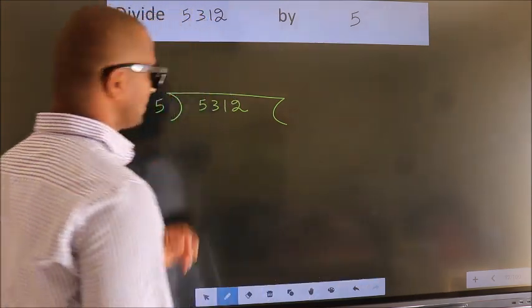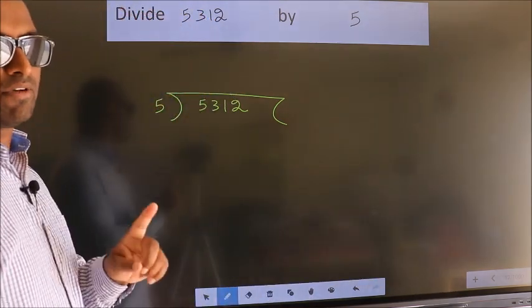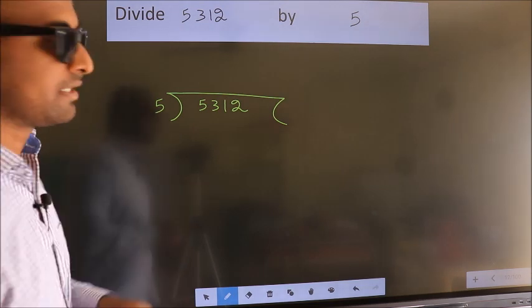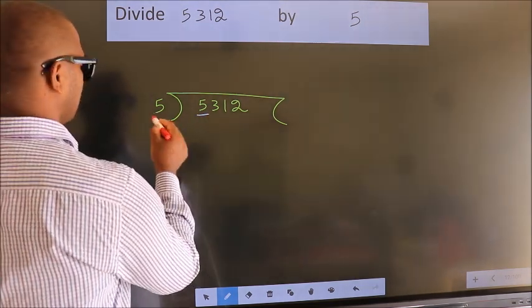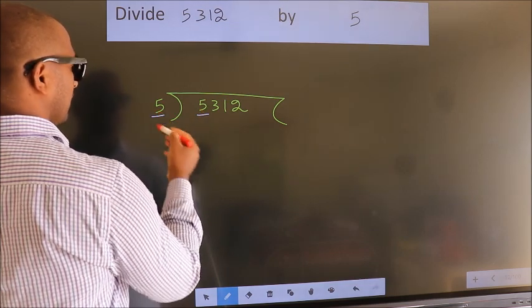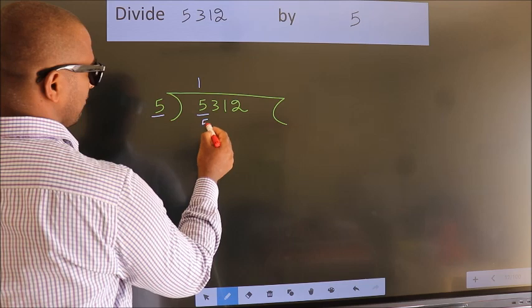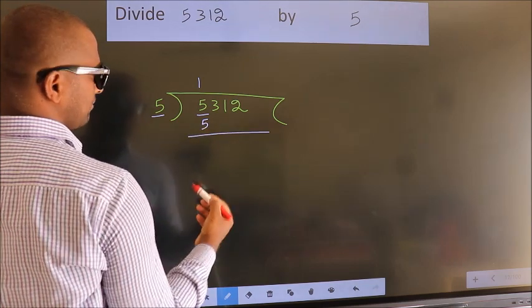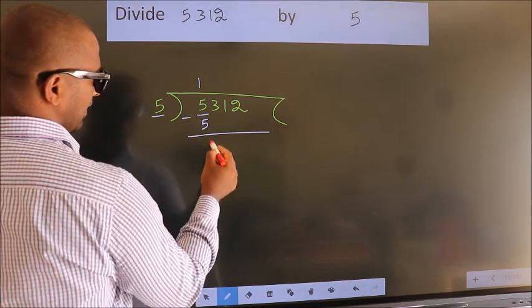This is your step 1. Next. Here we have 5, here 5. When do we get 5? In the 5 table. 5 once is 5. Now we should subtract. We get 0.